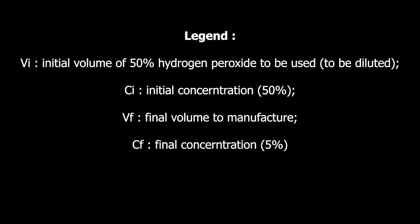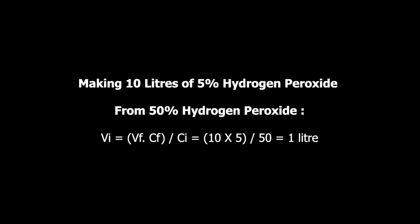VF stands for the volume that we need to manufacture. On this video I'll show you how to make 10 liters of 5% hydrogen peroxide, so VF will be 10 liters. CF is the final concentration — the concentration we wish to obtain — in this case 5%.